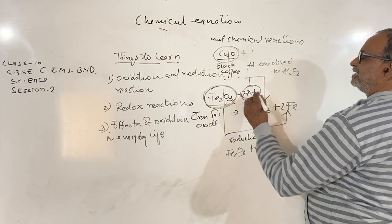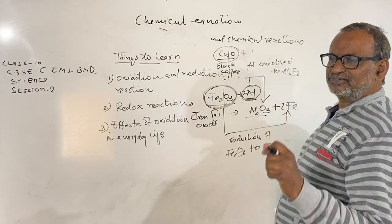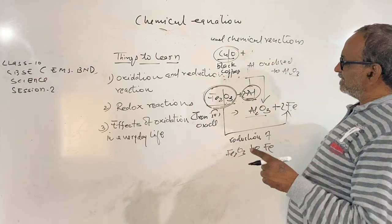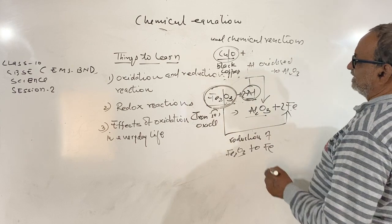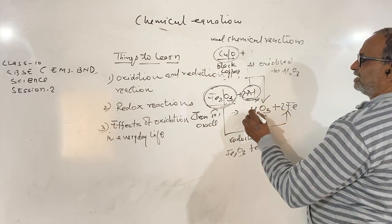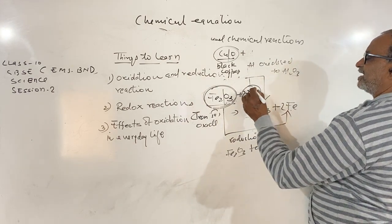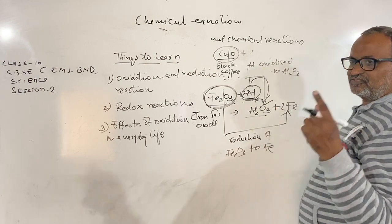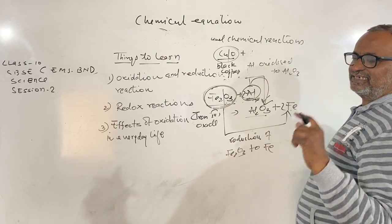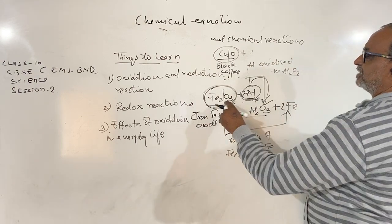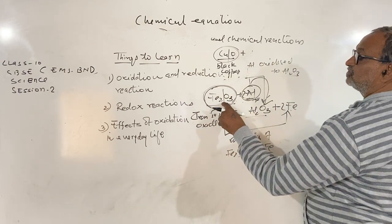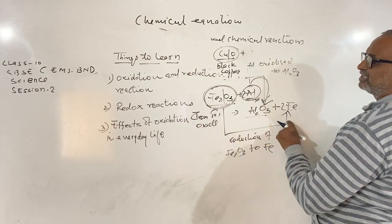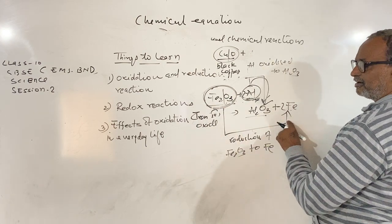Aluminium, as it removes oxygen from Fe₂O₃, is therefore a reducing agent. You can see that a reducing agent itself gets oxidized. So the substance which is oxidized is the reducing agent, and the substance which is reduced is the oxidizing agent.